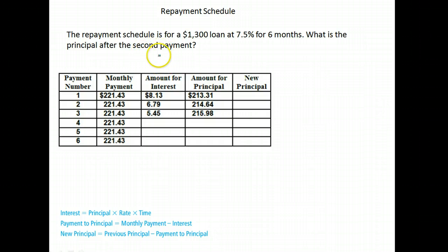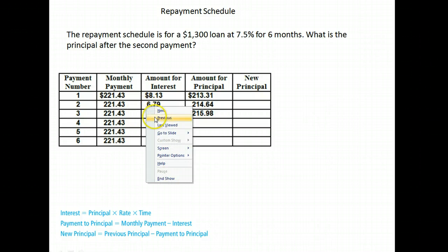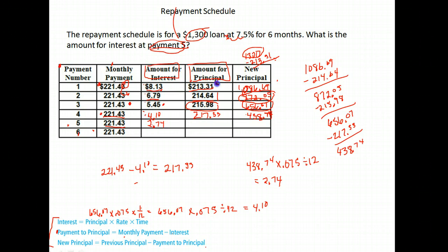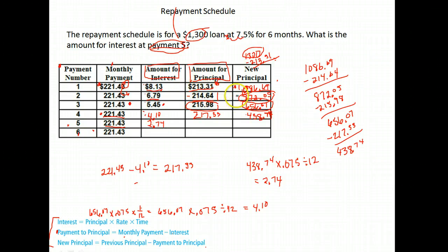What is the principal after the second payment? Let's go back and see because we already did that. The principal balance after the second payment is $872.05. We found that by taking the original balance at the top and subtracting the amount of principal with each payment: $1,300 minus $213.31 gives a balance after the first payment of $1,086.69, then subtracting the amount of principal from payment two gives us $872.05.